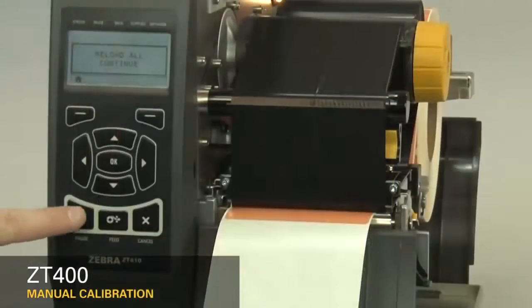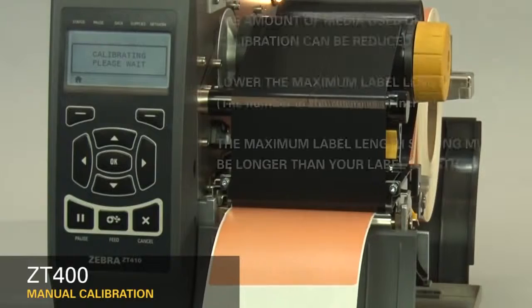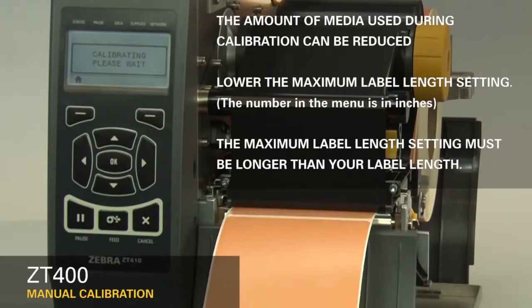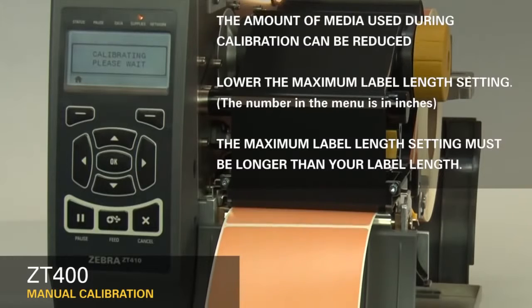The printer is now calibrating. Media will begin exiting the printer. The amount of media can be reduced by lowering the maximum label length setting in the menu. However, it is important that the maximum label length setting is larger than the label length you're printing. Otherwise, the printer may not correctly calibrate.